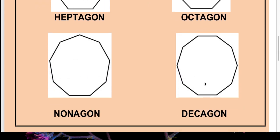The closed shape with nine sides is known as nonagon. See: 1, 2, 3, 4, 5, 6, 7, 8, 9 — nine sides, nonagon. The closed shape with ten sides is known as decagon. So the shapes which are new for us are decagon, nonagon, octagon, and heptagon.